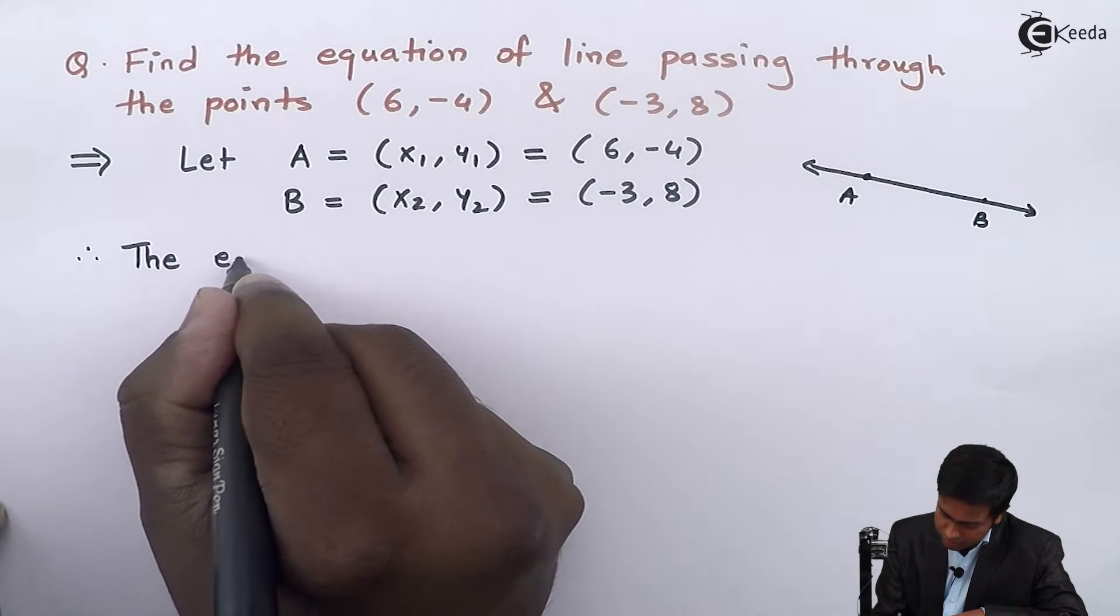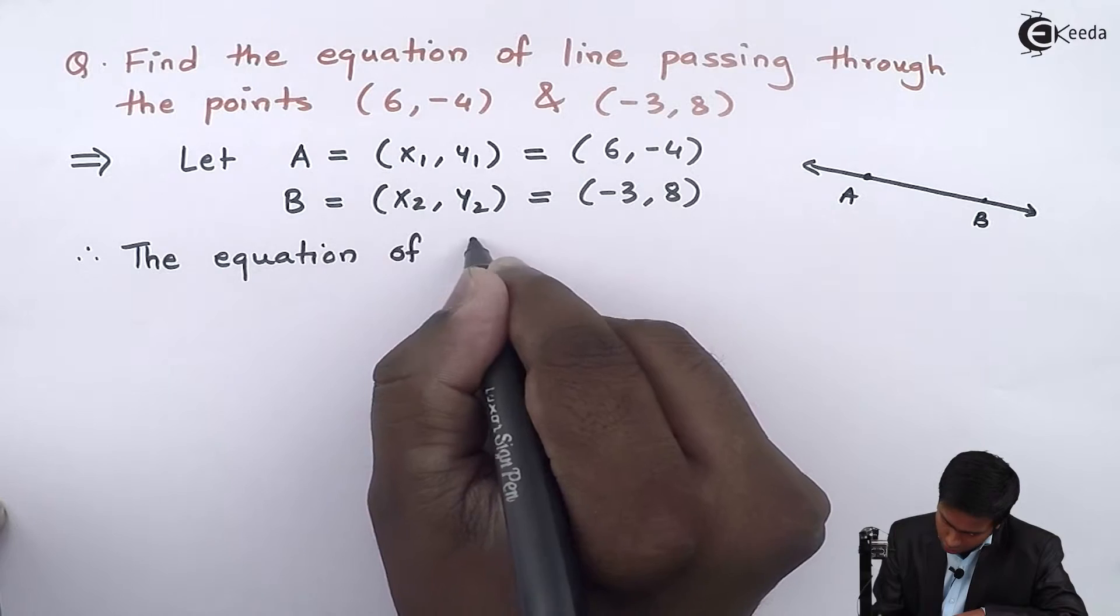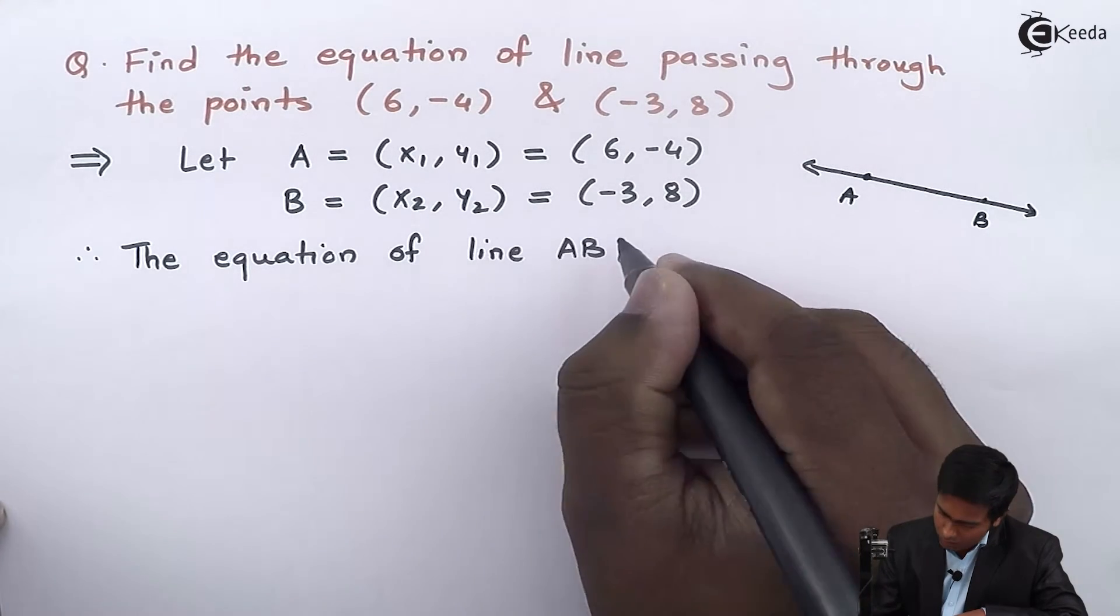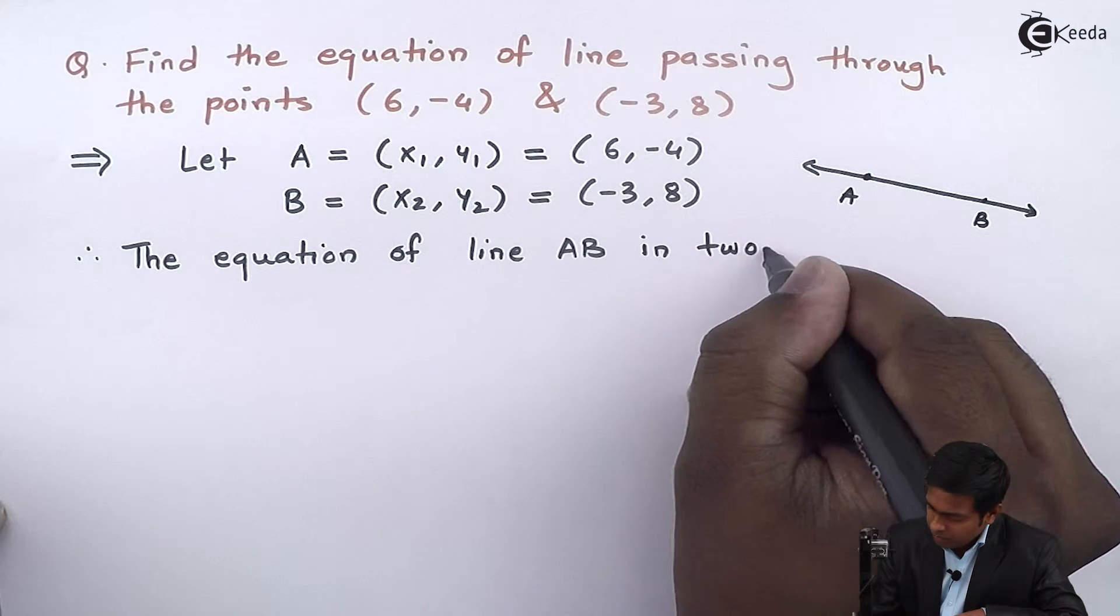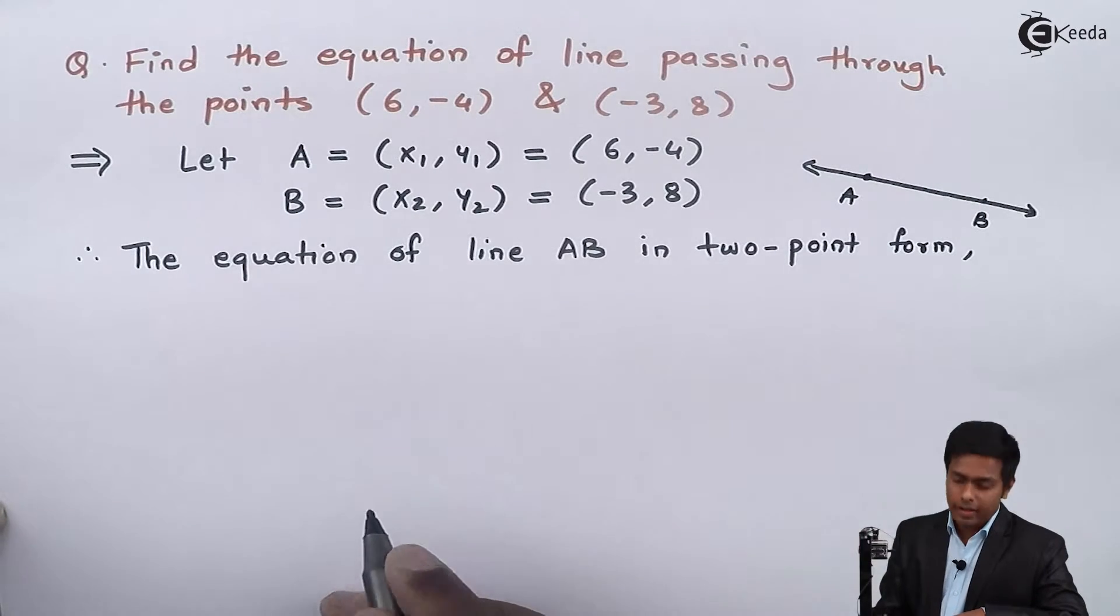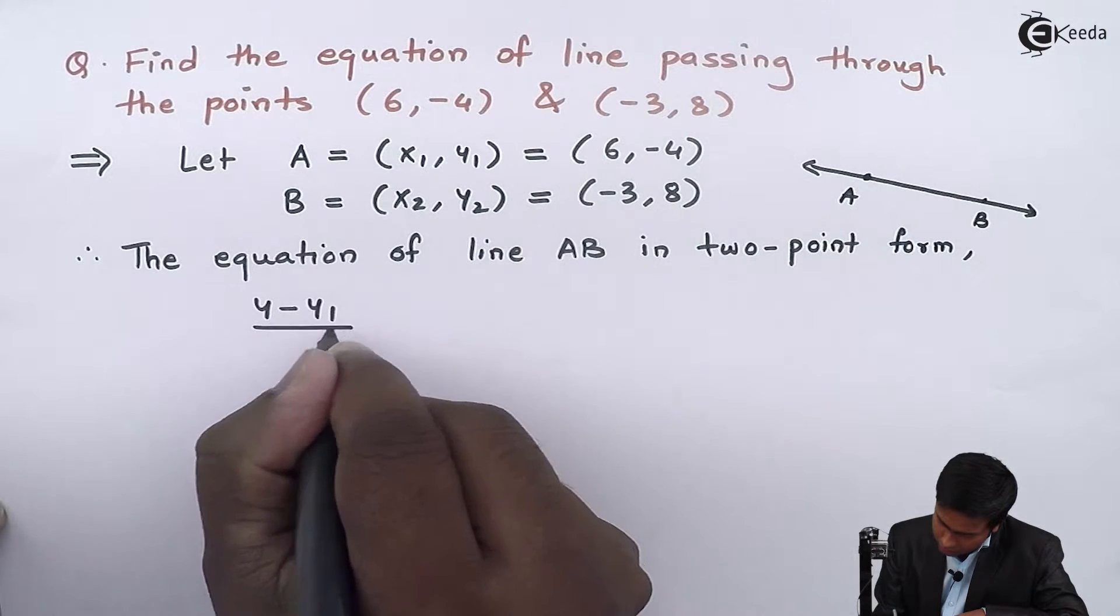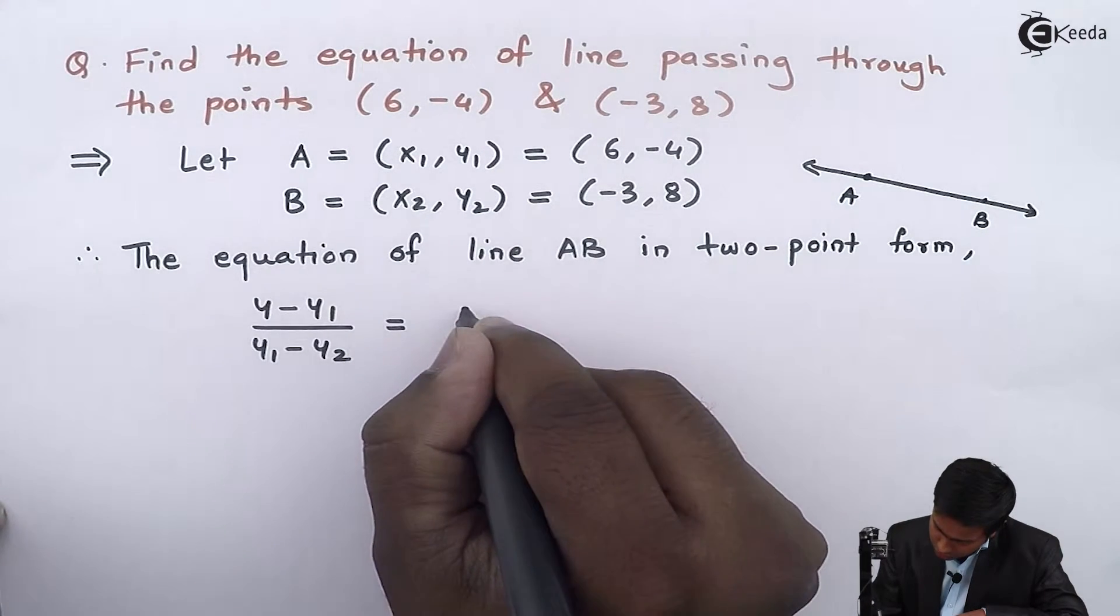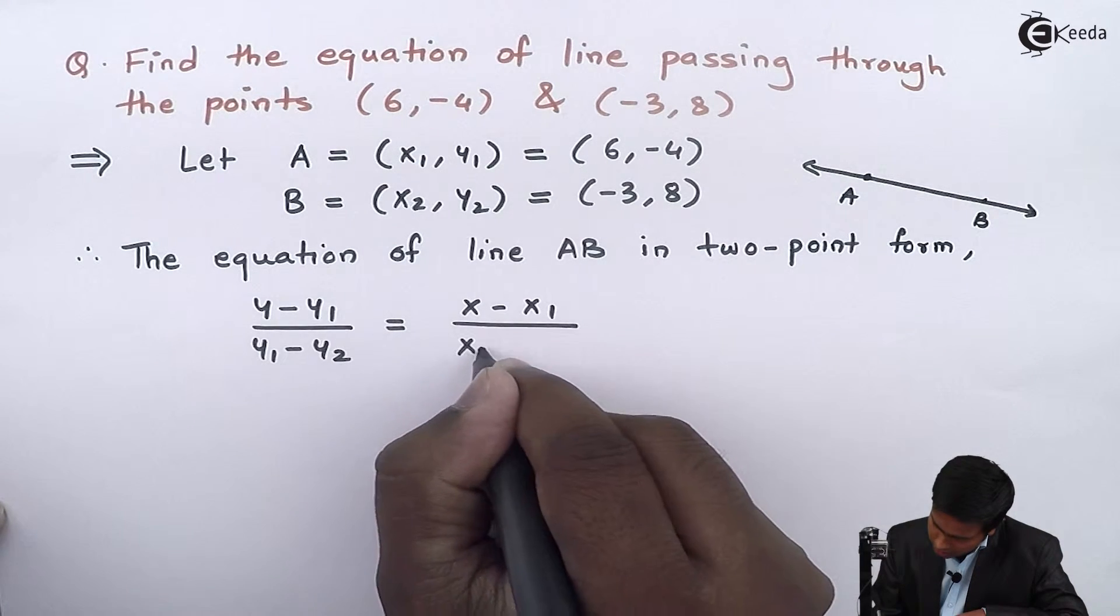Therefore, the equation of line AB in two-point form is given by the formula: (y - y₁)/(y₁ - y₂) = (x - x₁)/(x₁ - x₂).